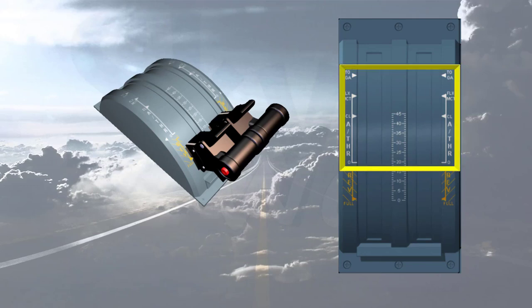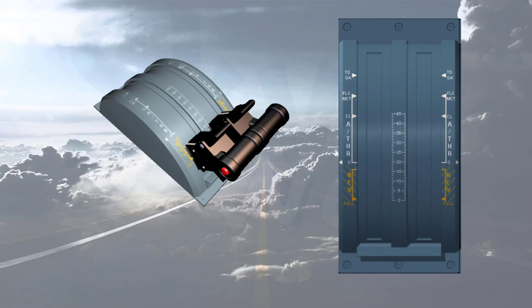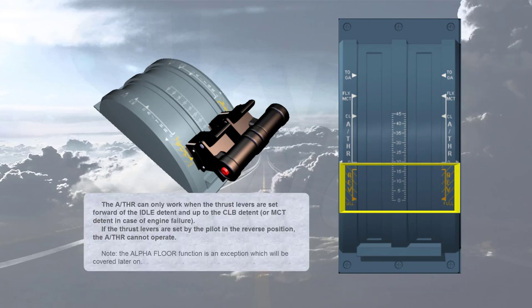TOGA for max takeoff or go-around thrust. The auto thrust can only work when the thrust levers are set forward of the idle detent and up to the climb detent, or the MCT detent in case of engine failure. If the thrust levers are set by the pilot in the reverse position, the auto thrust cannot operate.